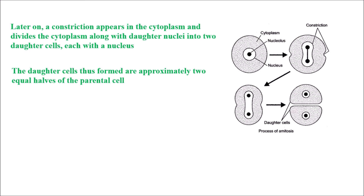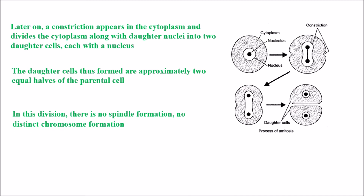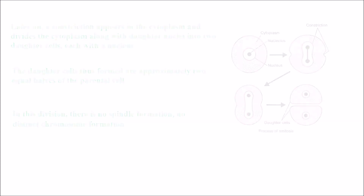In amitosis, there is no spindle formation and no distinct chromosome formation occurs.